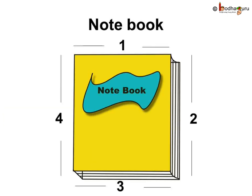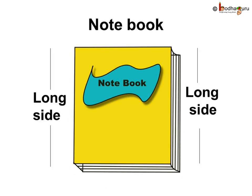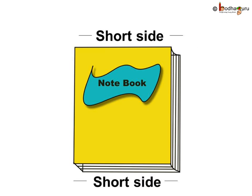It looks different from your handkerchief or the chess board. But, it also has one, two, three and four sides. Then, what is the difference? Wait a minute. The sides do not appear to be of the same length. The two sides are long. And, these two sides are short.